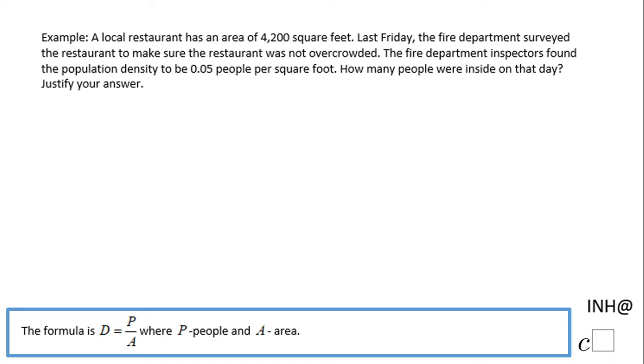For this, I'm going to use the formula D equals P over A, where D stands for density, P is the population or number of people inside the restaurant, and A is the area of the restaurant.